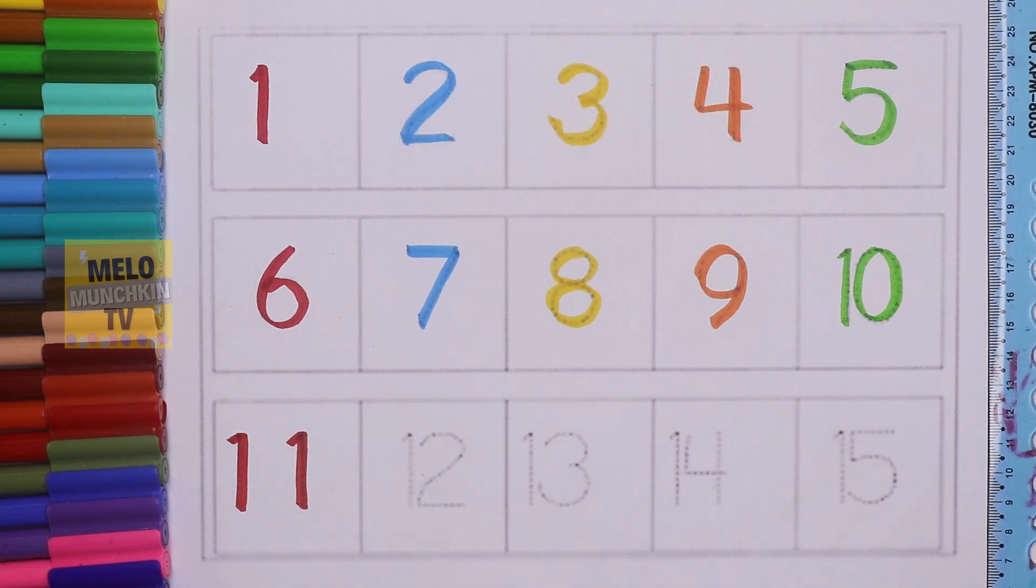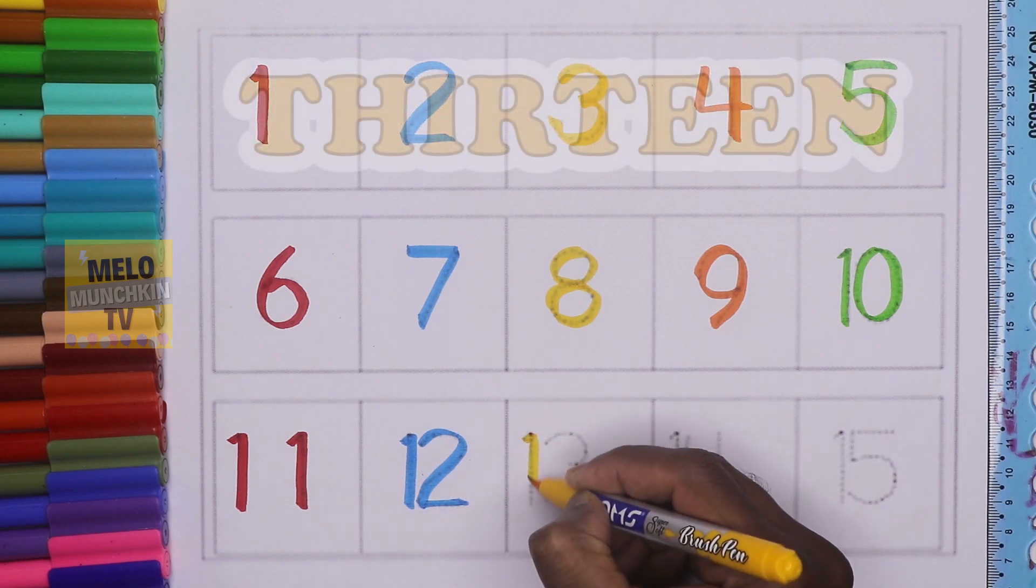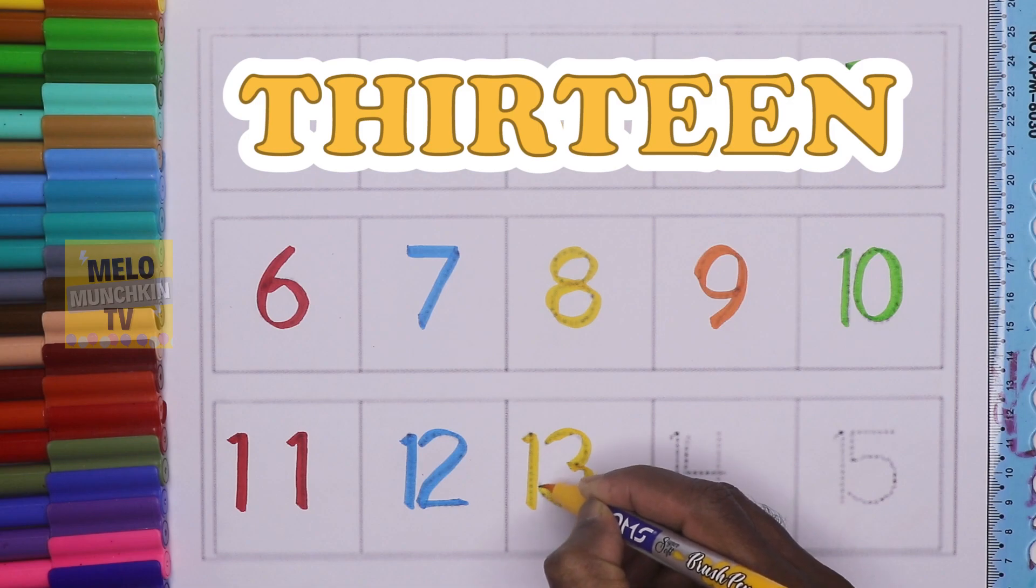E-N, 11. Twelve: T-W-E-L-V-E, 12. Thirteen: T-H-I-R-T-E-E-N, 13.